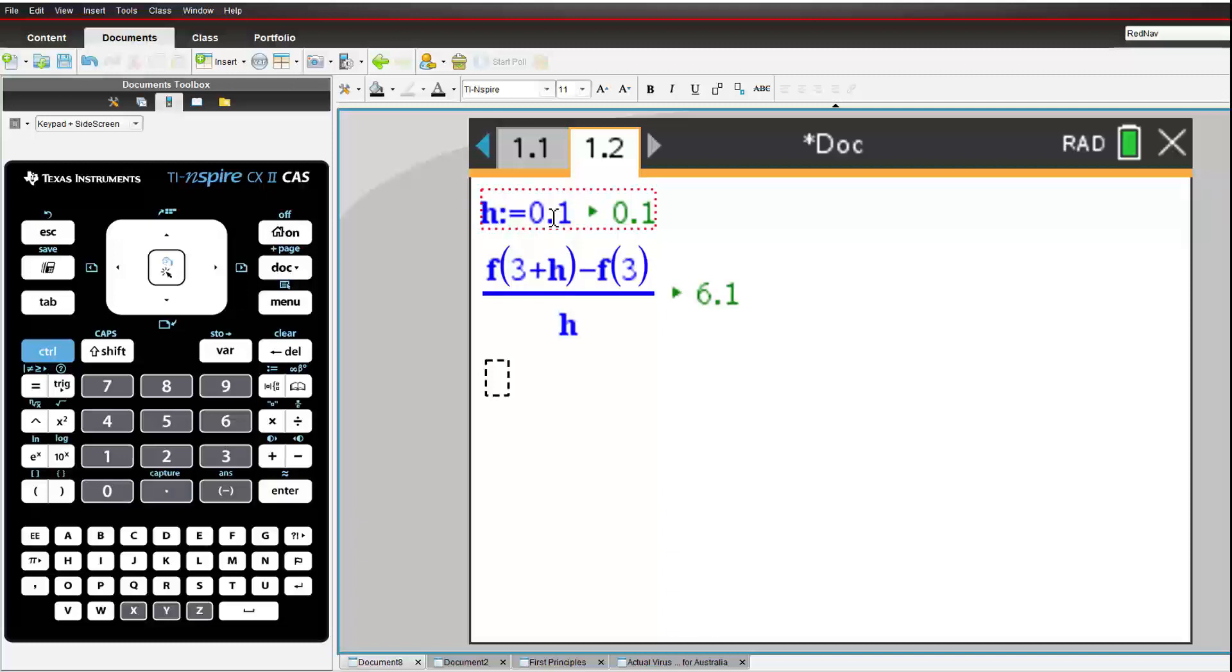Now it appears that the gradient of the curve, y equals x squared, when x equals 3, is equal to 6.